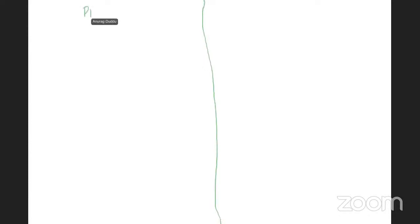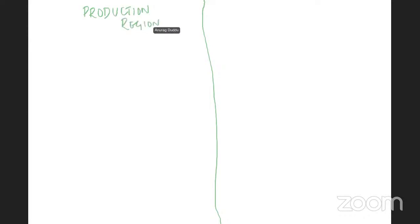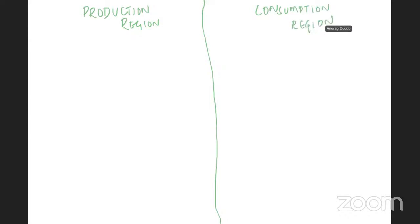Let me take over the board for this. This is basically the production region — wherever your produce is coming from. And this is the consumption region. The reason this region differentiation is important: people today — especially larger enterprises — tend to discount the value of what goes into getting produce from point A to point B.